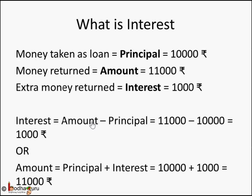So interest equals amount minus principal. Rearranging, amount equals principal plus interest. Sukram took a loan of 10,000 rupees, 1,000 rupees is the interest, so 10,000 plus 1,000 equals 11,000 rupees is the amount returned.